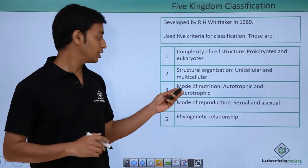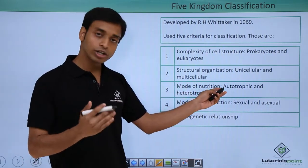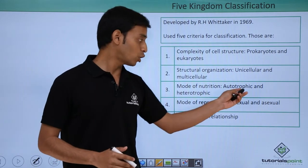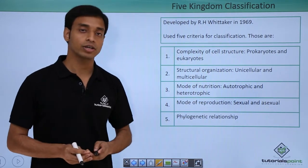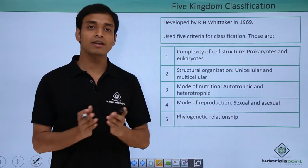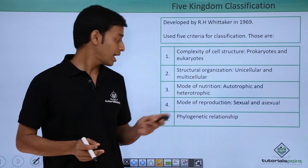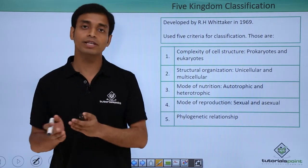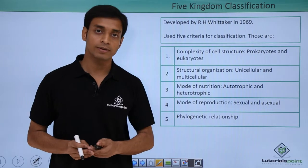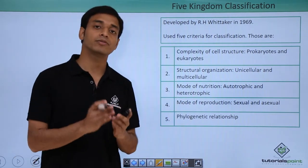The next criterion used was the mode of nutrition. There are two groups: autotrophic and heterotrophic. Autotrophic organisms are those which can make their own food with the help of chlorophyll, like plants. Heterotrophic organisms cannot make their own food and are dependent on autotrophs for their nutrition.